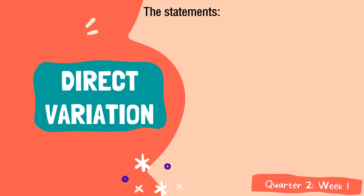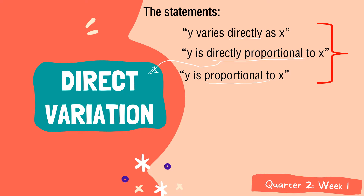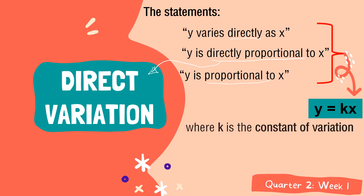Here are some statements that deal with direct variation: y varies directly as x; y is directly proportional to x; and y is proportional to x. Whenever you encounter the terms directly, directly proportional, and proportional, those terms deal with direct variation. If you are going to write this statement into an equation, it will be written as y is equal to kx, where k is the constant of variation.